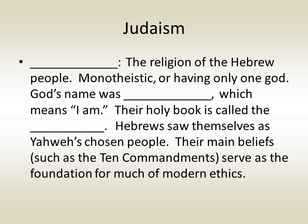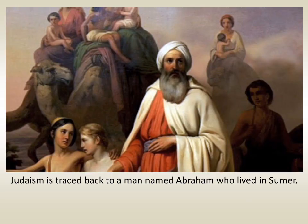The religion of the Hebrew people is called Judaism. It is monotheistic, having only one God whose name was Yahweh, meaning 'I am.' Their holy book is called the Torah. Hebrews saw themselves as Yahweh's chosen people, and their main beliefs — such as the Ten Commandments — served as the foundation for much of modern ethics. Judaism has its origins in a man named Abraham who lived in ancient Sumer. The religions of Christianity and Islam also trace their origins back to Abraham, and thus all three are referred to as Abrahamic religions.